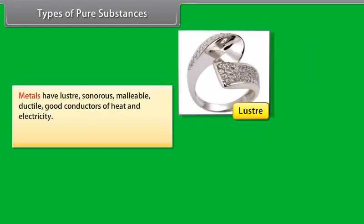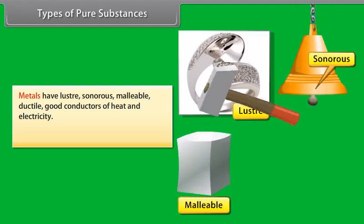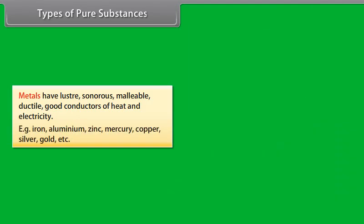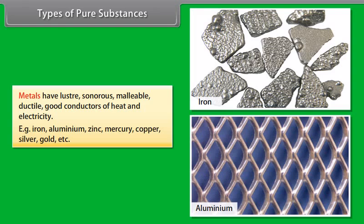Metals have lustre, are sonorous, malleable, ductile, and good conductors of heat and electricity. Examples include iron, aluminum, zinc, mercury, copper, silver, gold, etc.